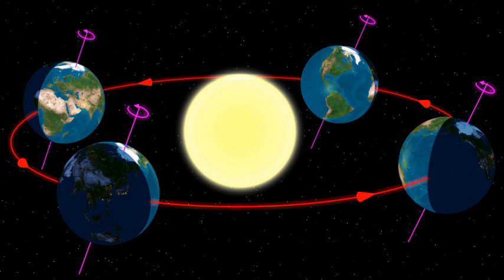The Hill Sphere of the Earth is about 1,500,000 km in radius, or approximately four times the average distance to the Moon. This is the maximal distance at which Earth's gravitational influence is stronger than the more distant Sun and planets. Objects orbiting the Earth must be within this radius, otherwise they can become unbound by the gravitational perturbation of the Sun.